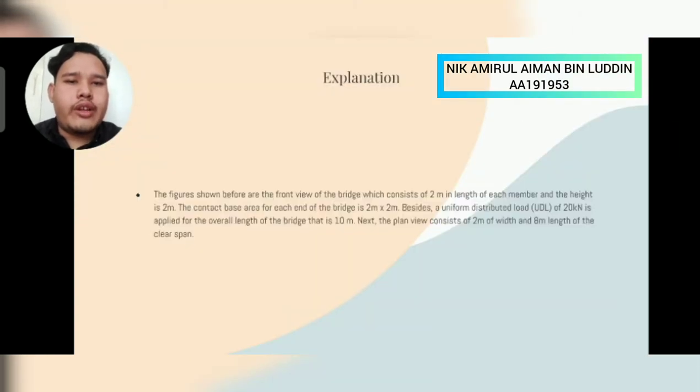For the explanation, the figure shown before is the front view of the bridge which consists of 2m in length of each member and the height is 2m. The contact base area at each end of the bridge is 2m times 2m.